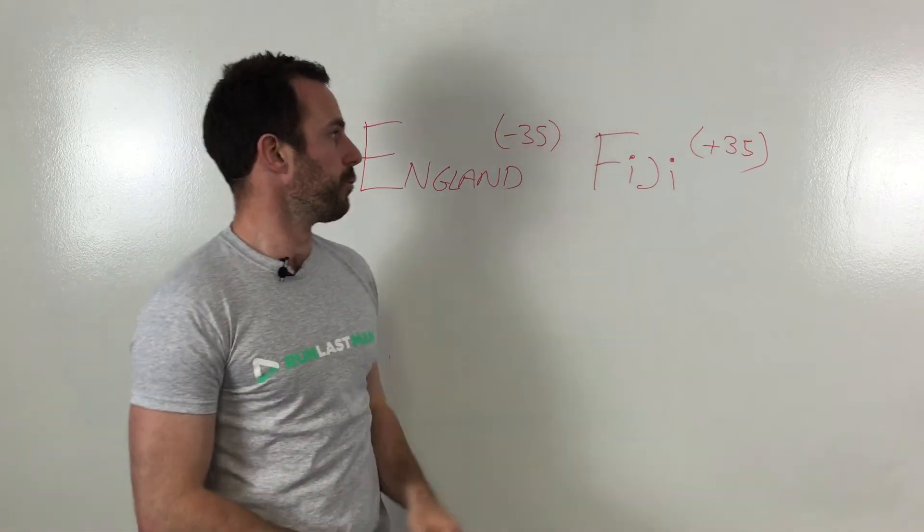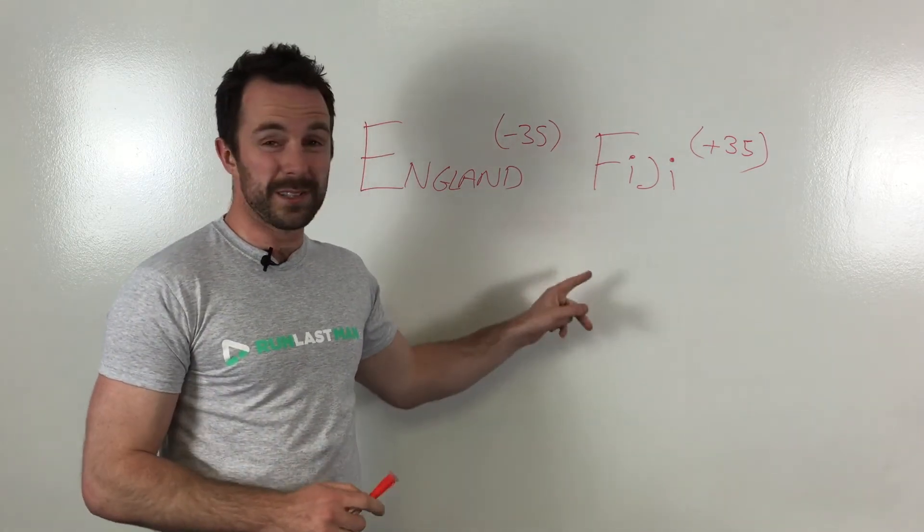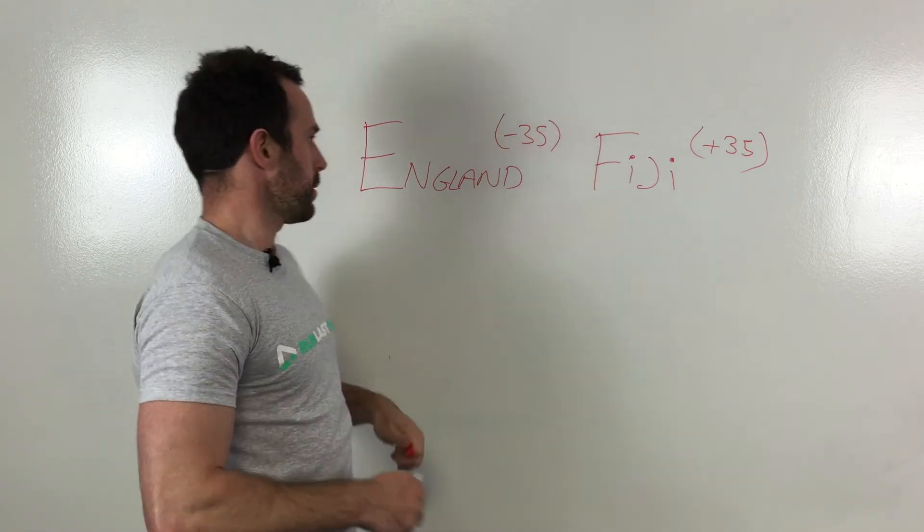If you think that Fiji will upset the audience and will do well against England, go for Fiji. That means if they lose by less than 35 points or actually win the game, you're through.